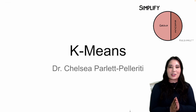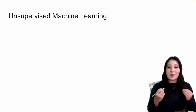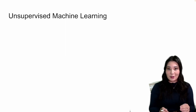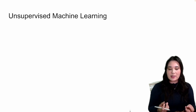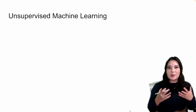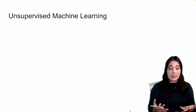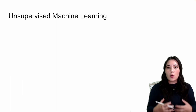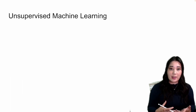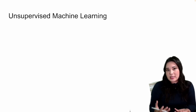Welcome to your lecture on k-means. This lecture is very exciting because it is our first unsupervised machine learning algorithm. So far all the algorithms that we've learned have been supervised. What this means is that there is a correct answer and the goal of our model is to predict it — for instance, in all of our classification models we have a correct answer: which category the data belongs to.